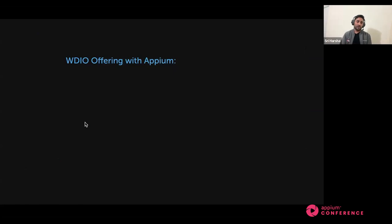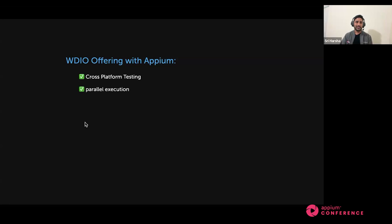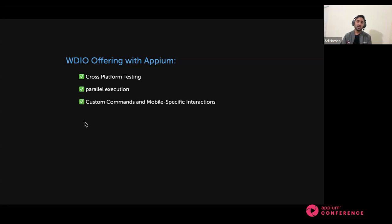What does WebdriverIO offer with Appium? It's cross-platform testing — WebdriverIO allows you to develop and run test cases in all environments: iOS, Android, and Windows. Appium can use the same WebdriverIO offerings in the backend, making your Appium tests more supported across all environments. Second is parallel execution — in the WebdriverIO configuration, you can set max instances and parallel configurations so that you can execute your Appium test cases in parallel. And there are custom commands and mobile-specific interactions: you can write custom locators for Appium, and WebdriverIO has inbuilt mobile-specific interactions like touch-based or scroll-based actions for native app testing.